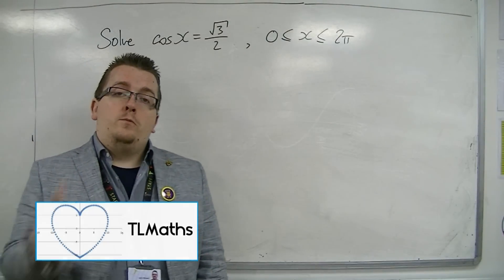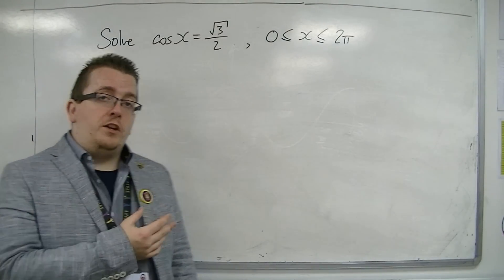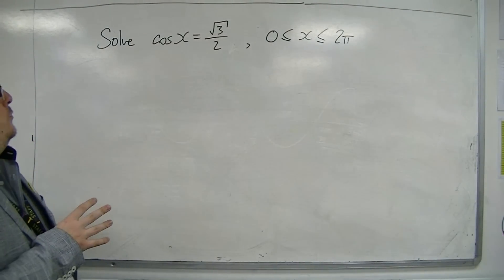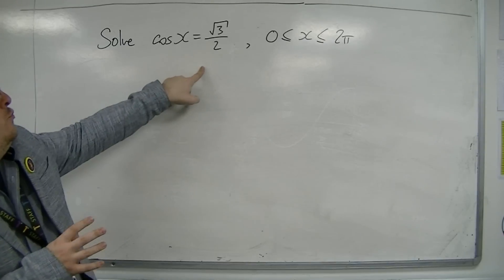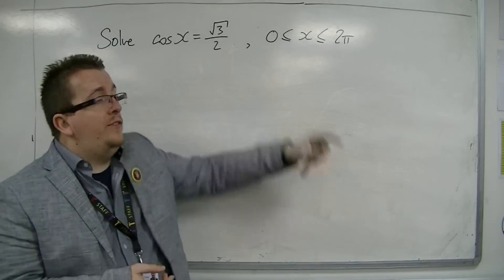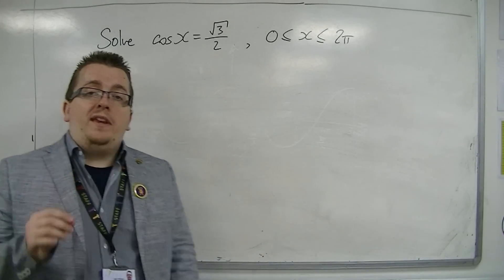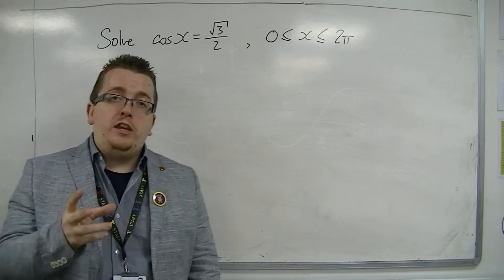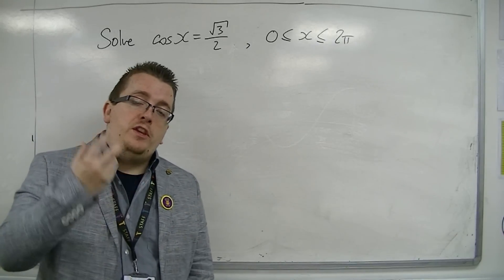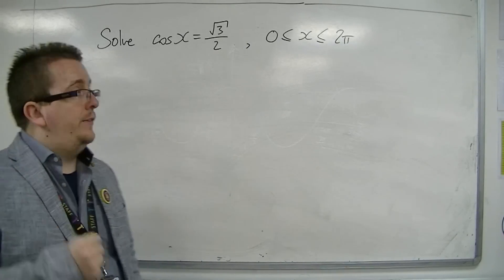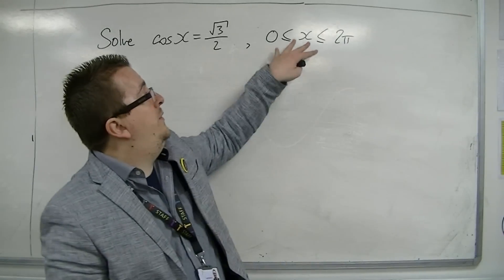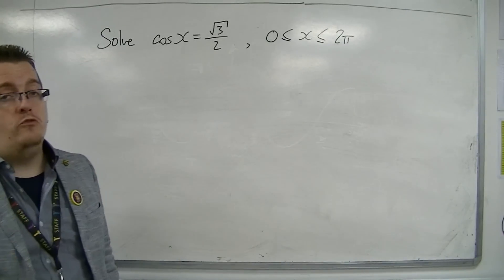So, here we are, we're going to be solving a cosine equation this time, and we've got to solve cos x equals root 3 over 2 between 0 and 2π. So, once again, make sure the first thing you do is determine whether you are meant to be in degrees or radians. And because we're working between 0 and 2π, that's telling you that we're in radians.